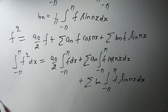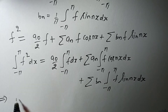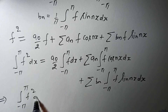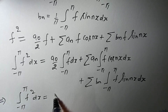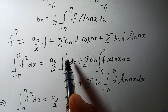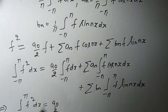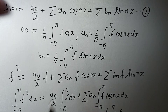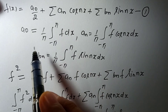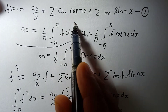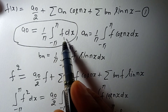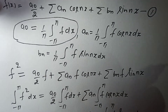Now, looking at the left-hand side: ∫₋π^π f² dx = (a₀/2) · ∫₋π^π f dx. If we see the Euler formula, ∫₋π^π f dx = a₀·π.